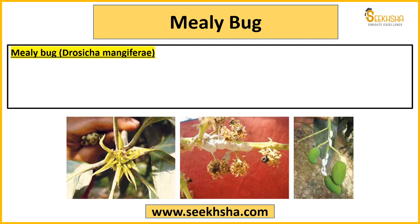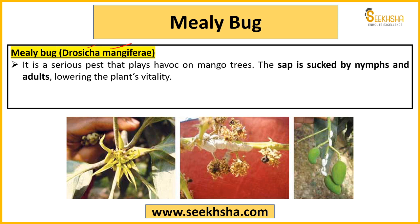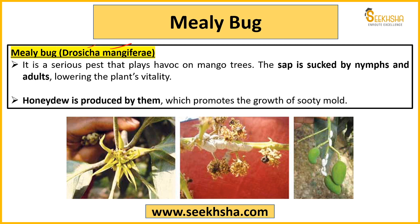Mealy bug ko dekhte hain — mealy bug ka jo botanical name hai: Drosicha mangiferae. Yaad rakhiyega, paper ke andar yeh puchhe jaate hain. Aur kaafi serious pest isko consider kiya jaata hai — mango trees ko kaafi zyada yeh impact karta hai. Aur iske andar jo nymph aur adult pest hota hai woh sap sucking karta hai plant ki, again plant ko kaafi zyada weak kar deta hai.